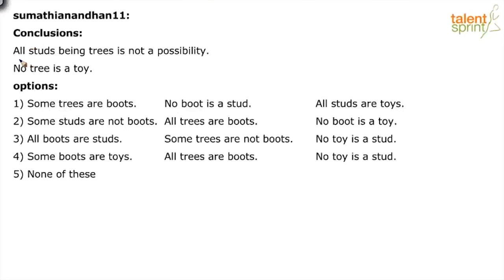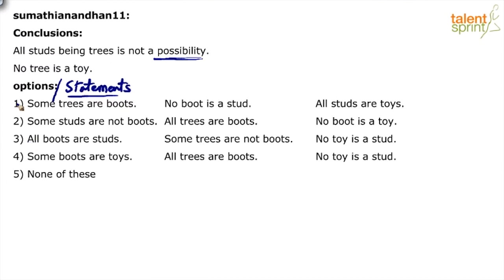We have been given two conclusions: all studs being trees is not a possibility, and no tree is a toy. One is a possibility-type conclusion and the other is a definite conclusion. Our job is to find out which of the given options - which are nothing but statements - will have these two conclusions as true.